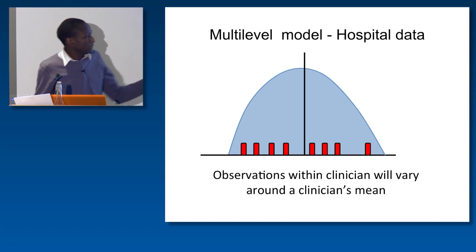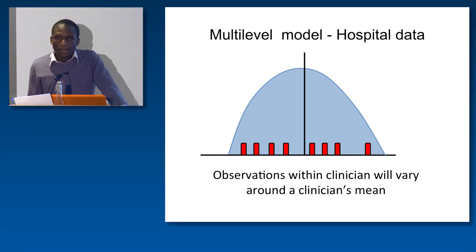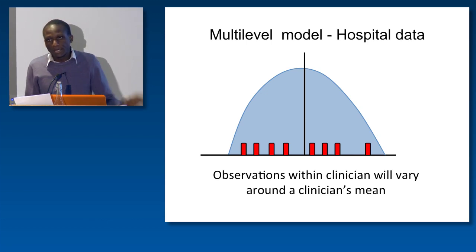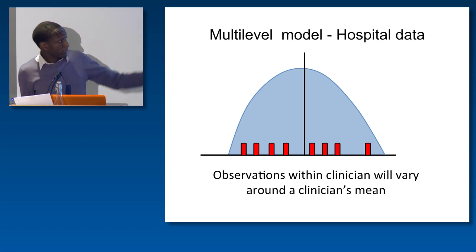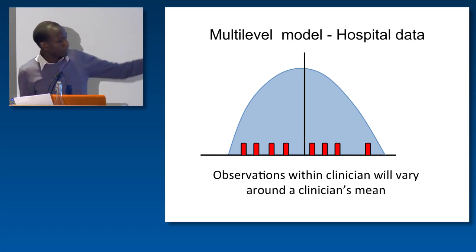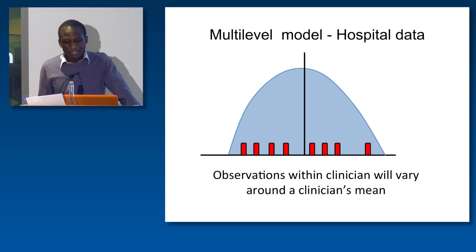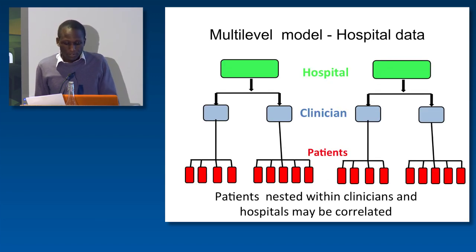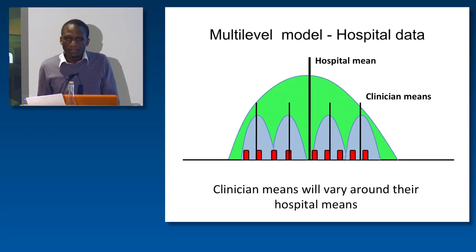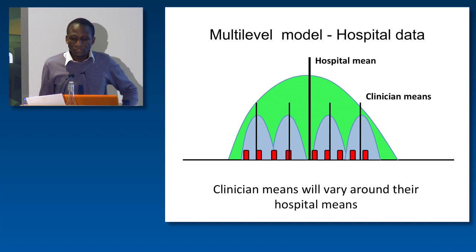Looking at the first level of hierarchical data structure, patients are nested within clinicians, which has interesting implications for analysis methods. For example, observations generated from patients seen by a single clinician will tend to vary around an average for that specific clinician. If one bar represents a patient on whom the clinician gets things right most of the time, and another represents a patient on whom the clinician rarely gets things right, all observations will center around the average performance of that clinician. The same is true at the hospital level, where individual clinician performance varies around the hospital mean.